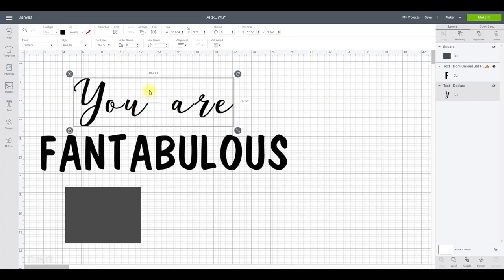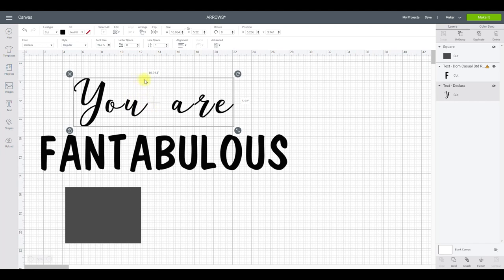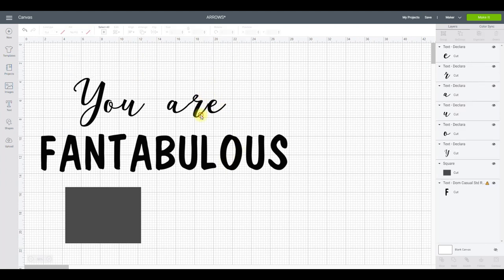So I'm in Design Space. And I've just written this very quickly. So this is the font Declara. And I will find it and link to it. And this is Dom Casual Standard Regular, which is a Design Space font. So with this one, I just need to bring those letters closer. So we can try letter space first, but we're still going to be out. So what we're going to do is go to advanced, ungroup to letters. I'm just going to move that R slightly, and then bring that E over. And then I'm just going to move that whole word so it's a little bit closer to the U.